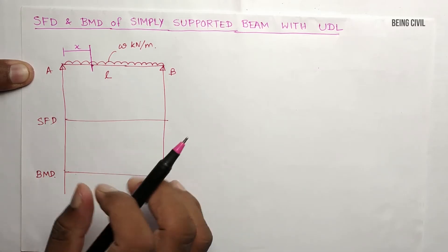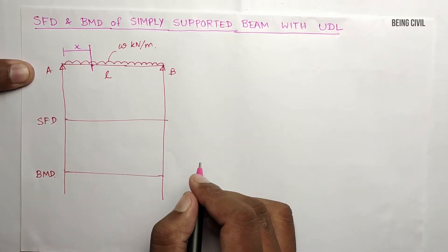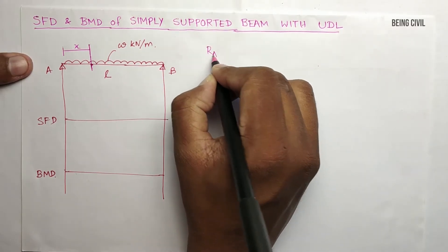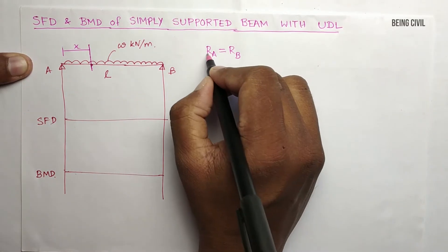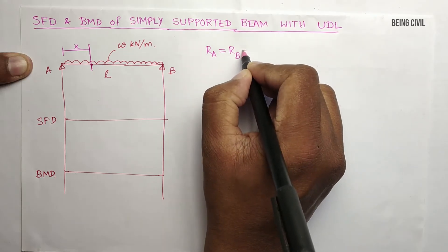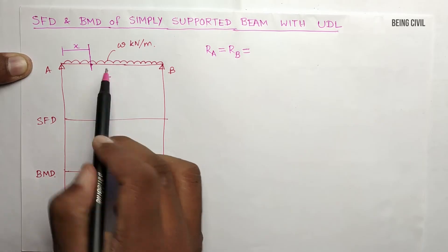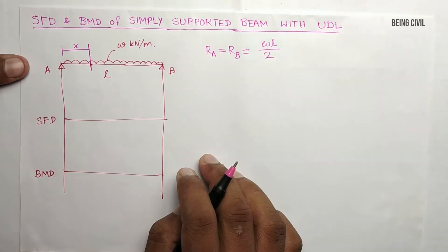So let's start. First, we have to calculate the reactions at A and B. You see, this is a beam with symmetric loading. RA and RB will be equal, so RA equals RB. The total load is W into length, so RA equals RB equals WL by 2.